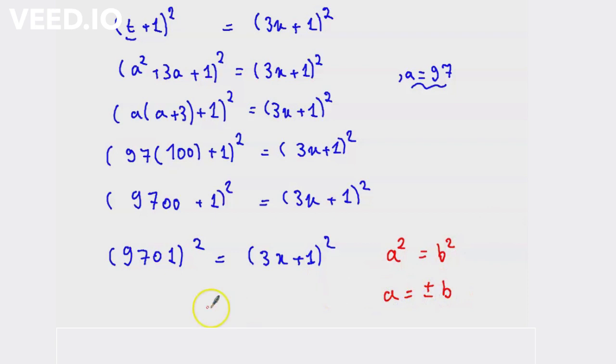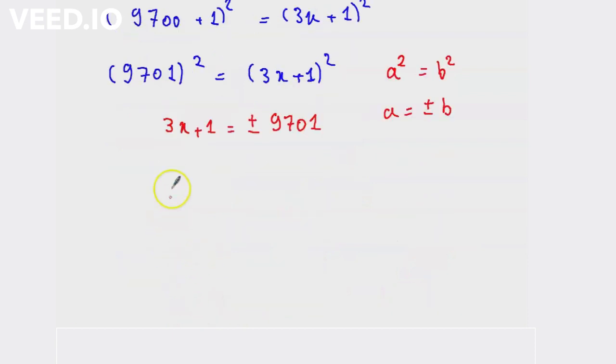3x + 1 equal to plus 9701 or 3x + 1 equal to minus 9701.